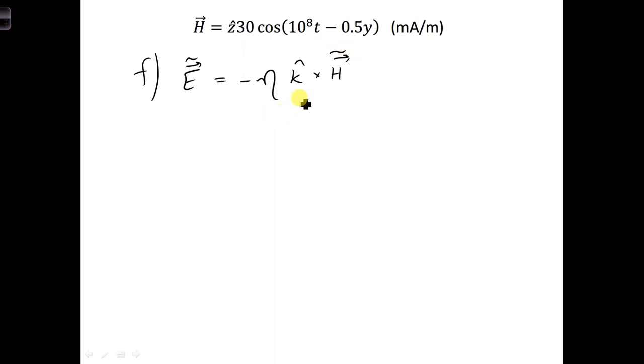So what this does is this cross product here gives us the correct direction, and multiplying times eta gives us the correct amplitude for the electric field.